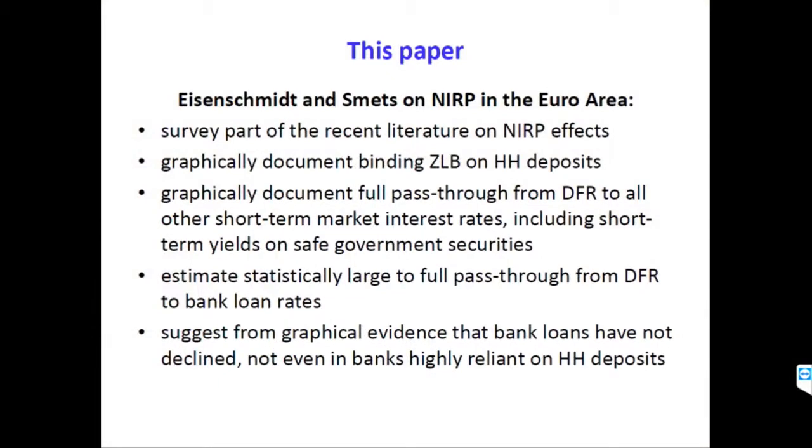Let me summarize what this paper does. It surveys part of the recent literature, graphically documents the binding zero lower bound on household deposits, and graphically documents full pass-through from the ECB's policy rate to all other short-term market interest rates, including very strong pass-through to short-term yields of safe government securities. It estimates statistically a large-to-full pass-through — with coefficients around 0.8 — from the policy rate to bank loan rates, and suggests from graphical evidence that bank loans have not declined.